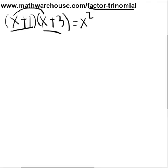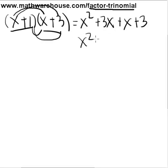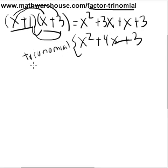You do x times x to get x squared. You also multiply the x by the 3 to get 3x, and of course we add these. You distribute the 1 to the x and the 1 to the 3 and then simplify: x squared plus 4x plus 3. This is a trinomial. It has three terms and it can't be simplified any further.